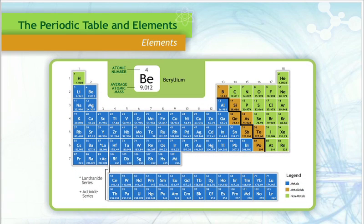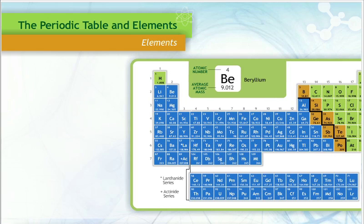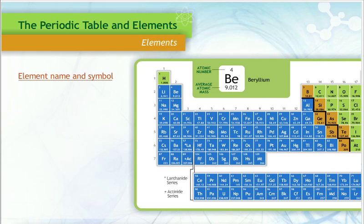There is a lot of information about each element on the Periodic Table, and it may seem very cluttered and difficult to read. The information presented for each element is information we discussed in Section 1: element name, element symbol, atomic number, atomic mass, and mass number.